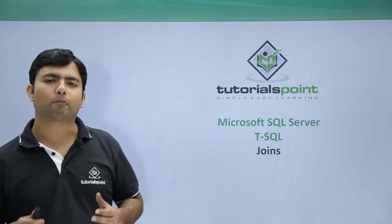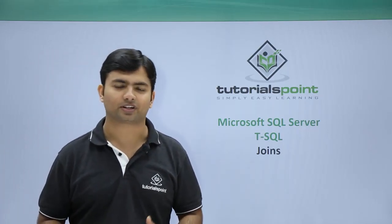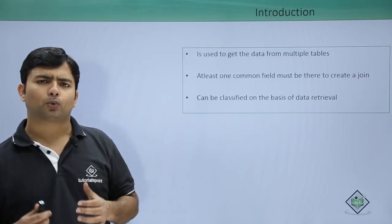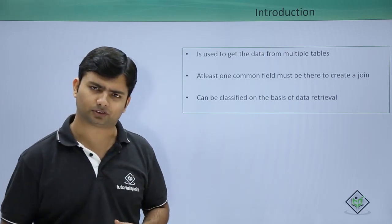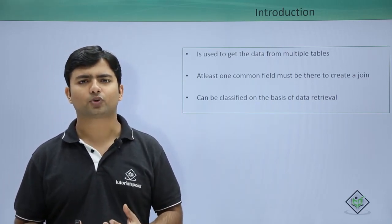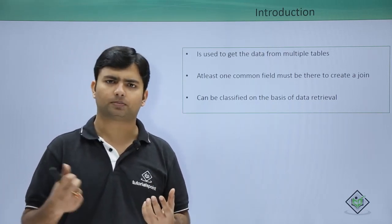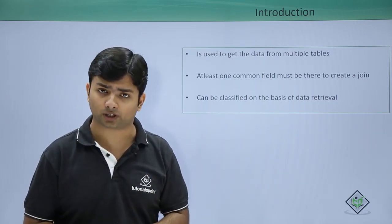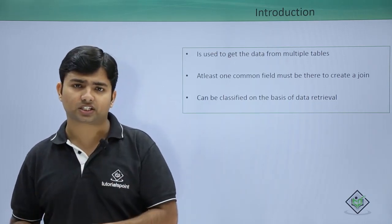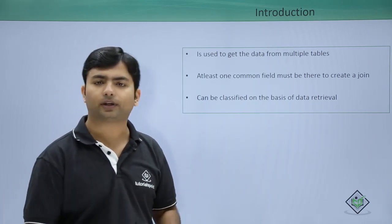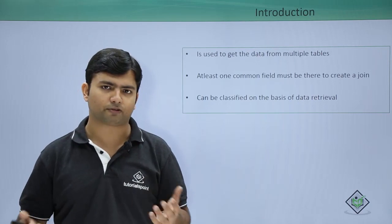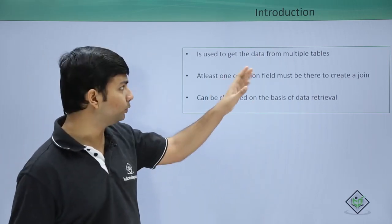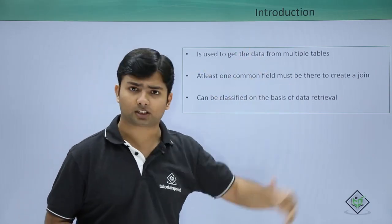We are going to cover a very important concept of the SELECT statement: joins. It is very common that we may want to get data from multiple tables. For example, I want to get the employee name along with the department name, or the employee name and the location where they are working. The location details, department details, and employee details reside in different tables, so for such scenarios we will use joins.